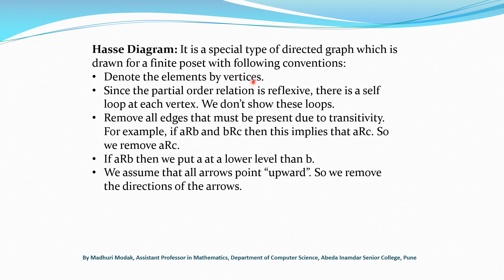The Hasse diagram is drawn only for a finite poset. The conventions: denote the elements by vertices. Since the partial order relation is reflexive, there is a self-loop at each vertex — we don't show these loops. Remove all edges that must be present due to transitivity. For example, if A is related to B and B is related to C, this implies A is related to C, so we remove the direct edge from A to C.